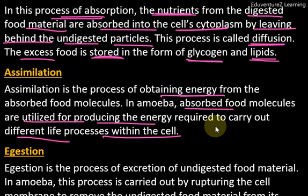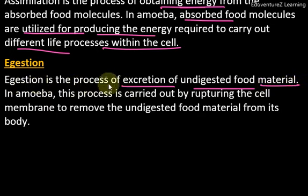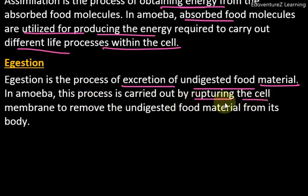The next process is egestion. After digestion and absorption, the waste products must come out. In human beings, nutrients are absorbed and roughage passes to the large intestine and finally exits through the anus. But in amoeba, egestion is the process of excretion of undigested food material, and this process is carried out by rupturing the cell membrane to remove the undigested food material from its body.